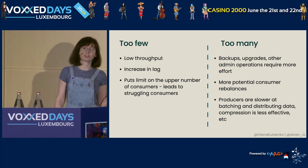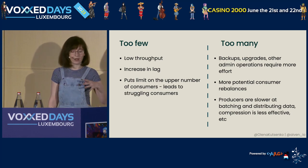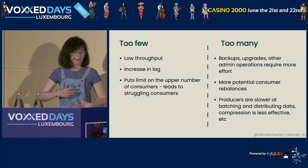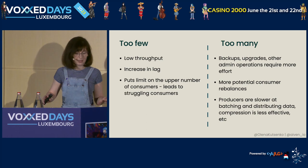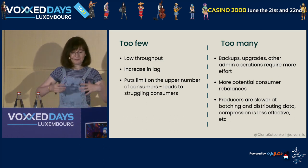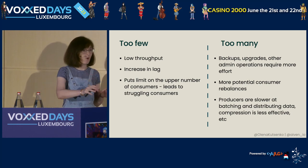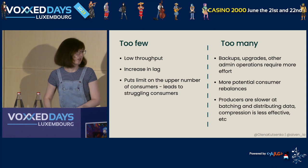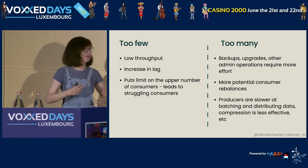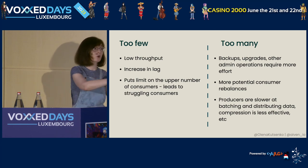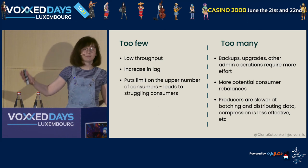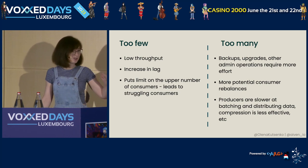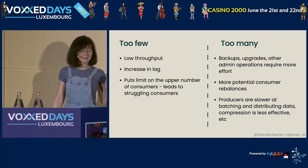Not to mention that with more partitions, you also risk having more frequent consumer rebalancing. Consumer rebalancing is the reassignment of partition ownership by consumers — every consumer in the consumer group is assigned to one or more partitions exclusively. When something happens and some consumer nodes go down or a new one is added, we have to reassign which consumer takes responsibility for each partition. So be aware that having too many partitions doesn't come for free.